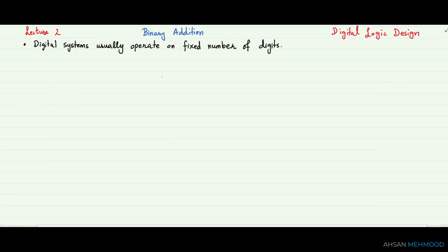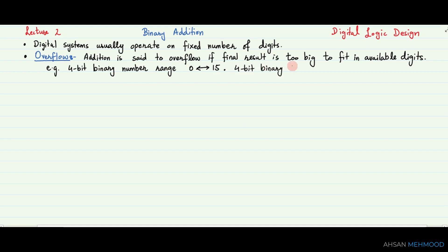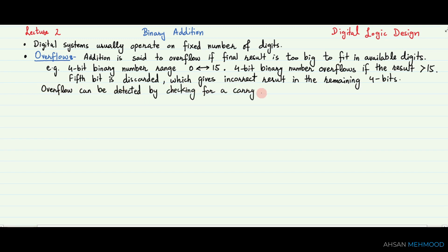Digital systems usually operate on a fixed number of digits. Addition is set to overflow if the final result is too big to fit in the available digits. For example, a 4-bit number has a range 0 to 15. 4-bit binary addition overflows if the result exceeds 15. The fifth bit is discarded, producing an incorrect result in the remaining 4 bits. Overflow can be detected by checking for a carry out of the most significant column.